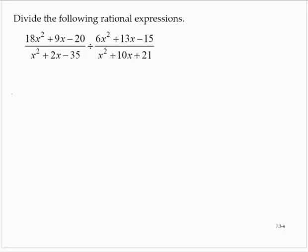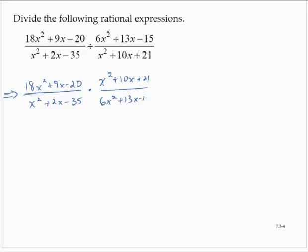First thing I'm going to do is rewrite this as multiplication by the reciprocal. 18x² + 9x - 20 over x² + 2x - 35 times x² + 10x + 21 over 6x² + 13x - 15.